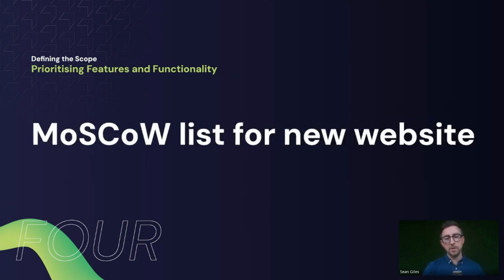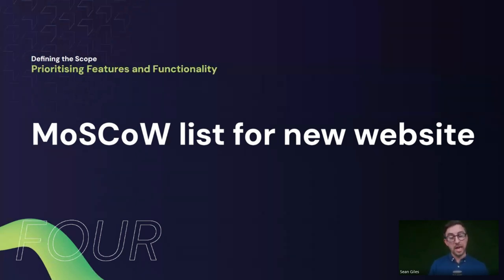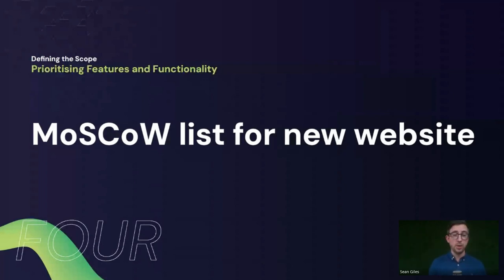For prioritizing features and functionality, a method that works really well is the MoSCoW list for your new website. This stands for Must Have, Should Have, Could Have, and Won't Have. You want to define what the website must have, what it should have, what could happen, and what you don't want. This helps you laser-focus on the most important priorities. You can do this simply in a Word doc or Excel doc — whatever works best for you.